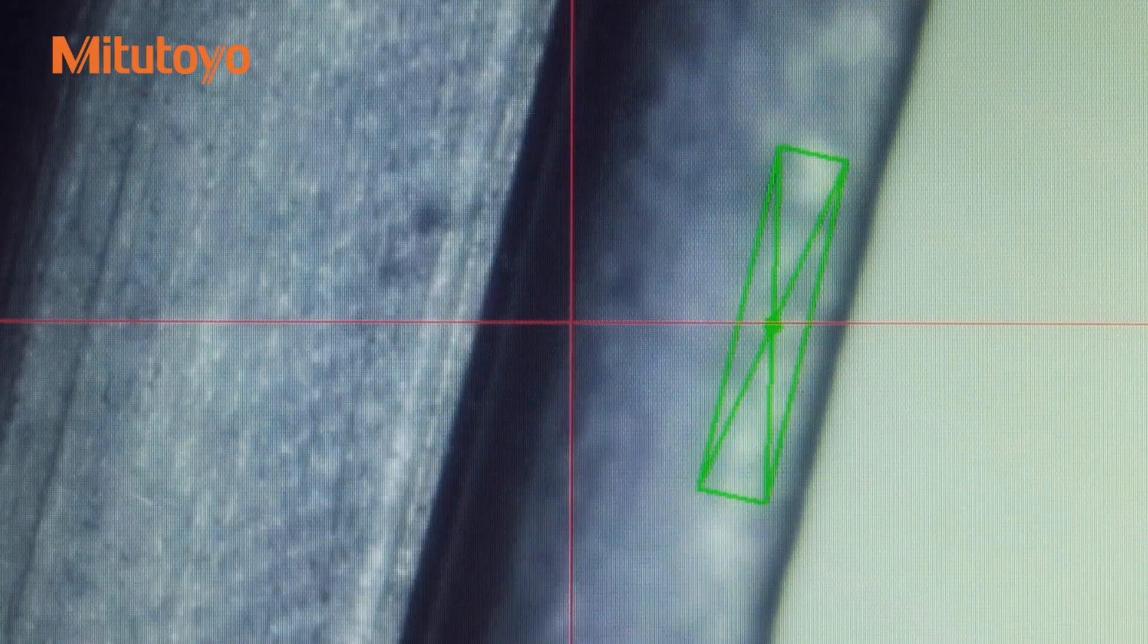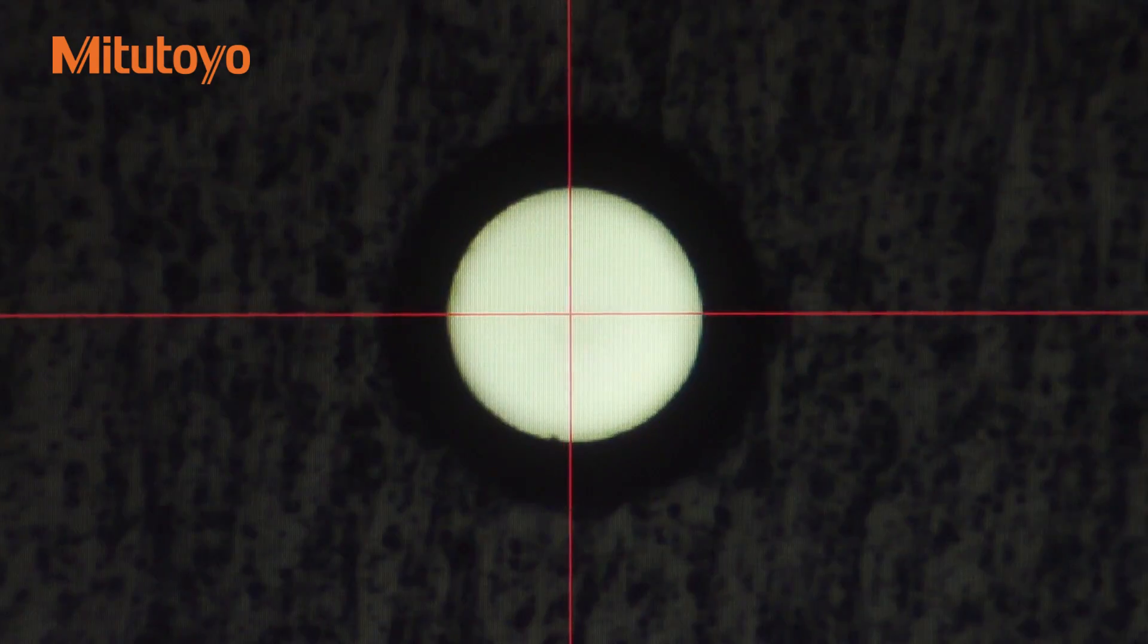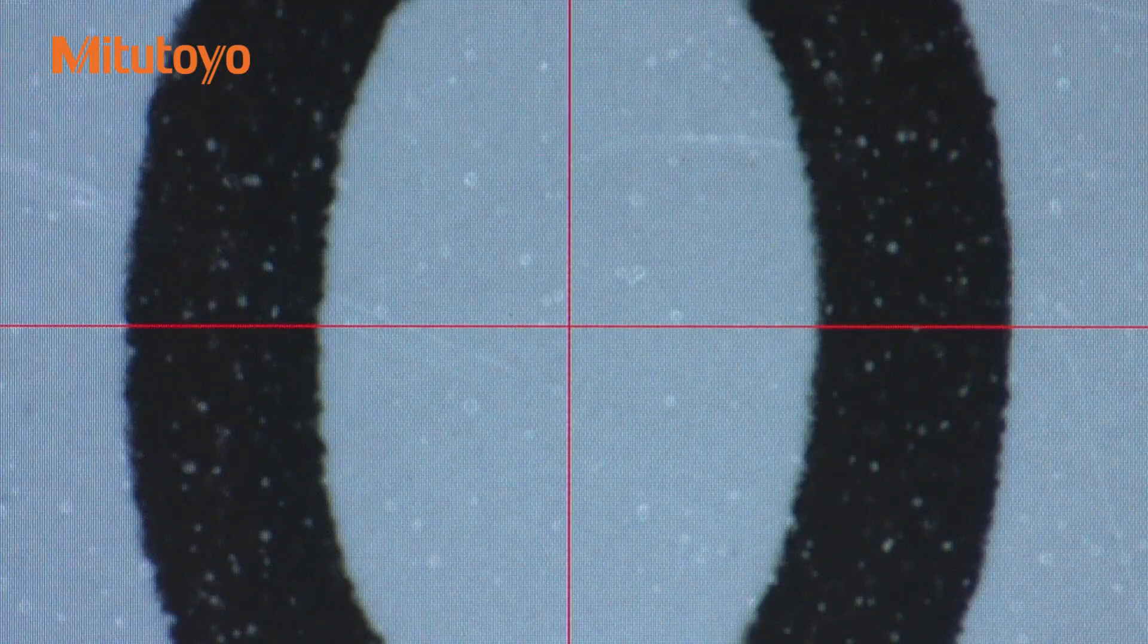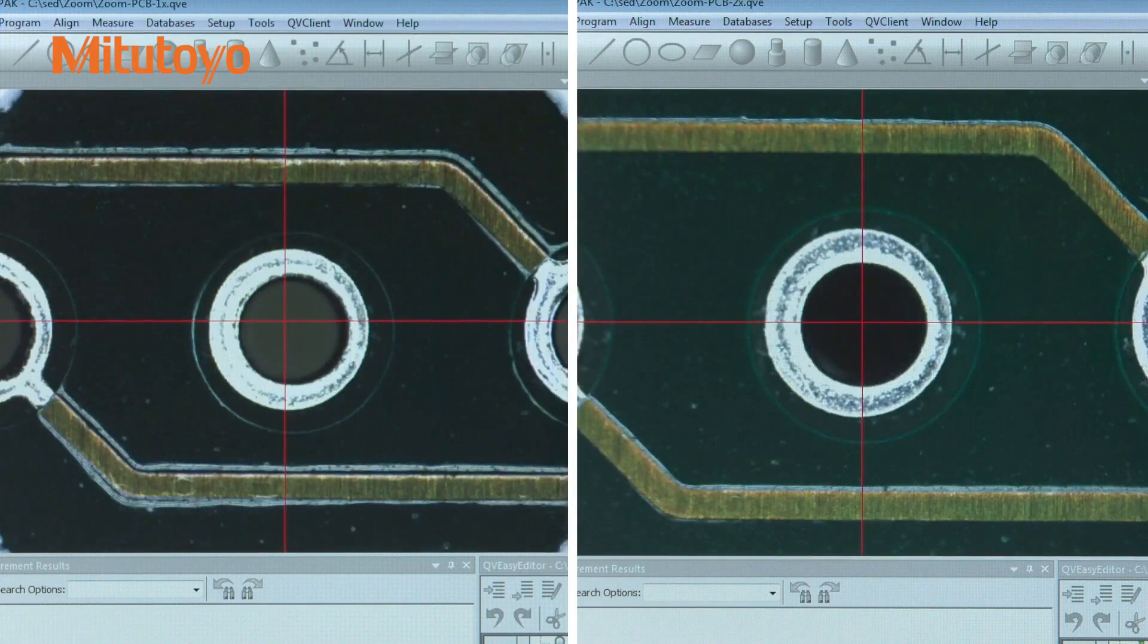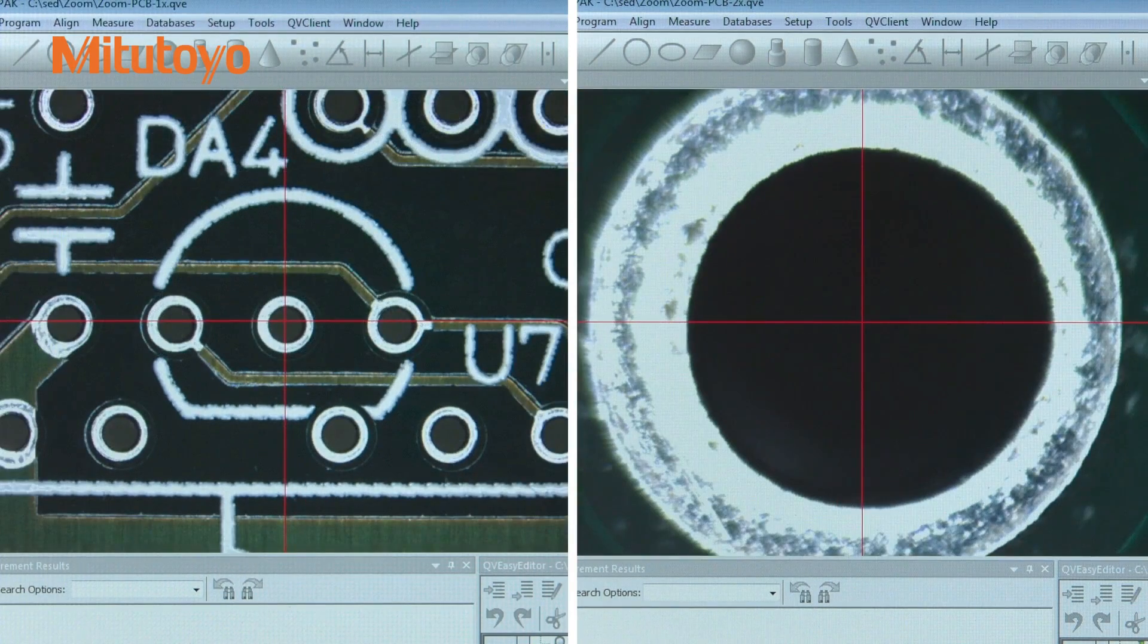The QV Active offers a range of magnifications to meet the challenges of measuring small features. The eight-step zoom lens can achieve a magnification range of 0.5 times to 7 times while maintaining crisp image quality.